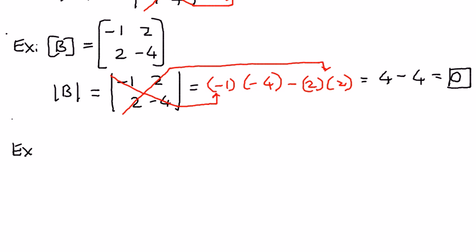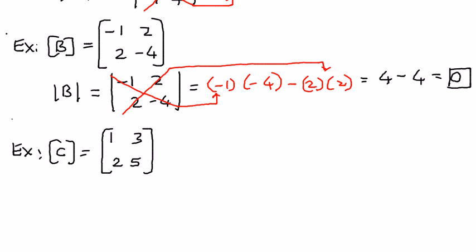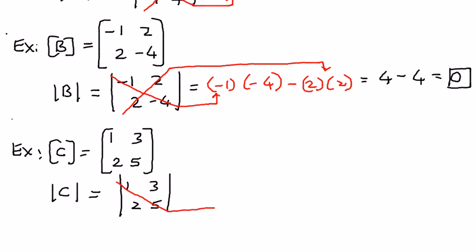In this third example, let's say we have a matrix C, and the elements of this matrix C are 1, 3, 2, and 5. We want to find the determinant of this. We write it using the determinant symbol: 1, 3, 2, and 5, and we find the product of the major diagonal minus the product of the minor diagonal — that is 1 times 5 minus 2 times 3.